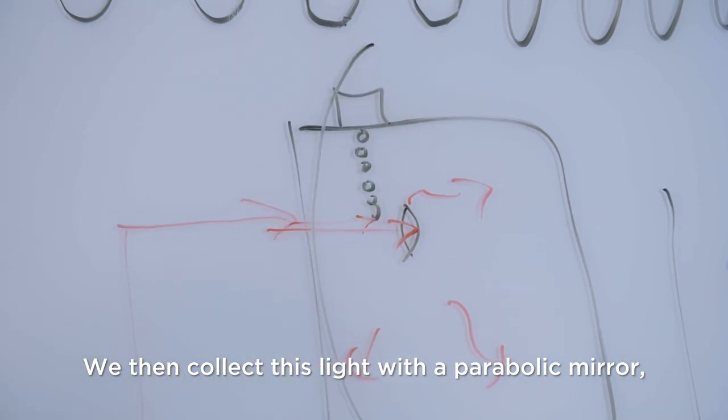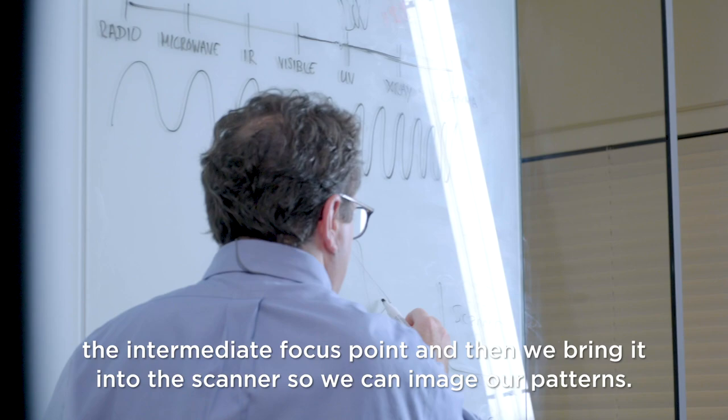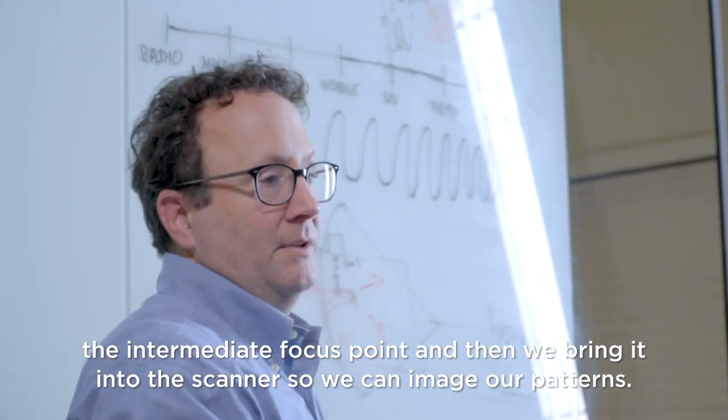We then collect this light with a parabolic mirror, focus it at a point called the intermediate focus point, and then bring it into the scanner so we can image our patterns.